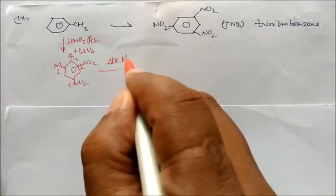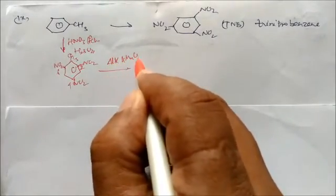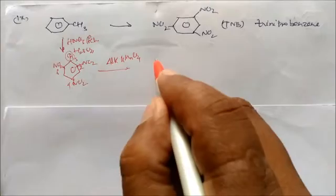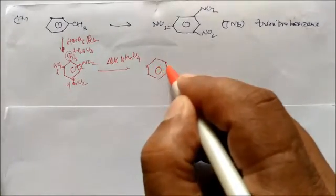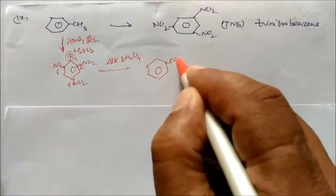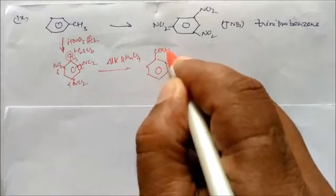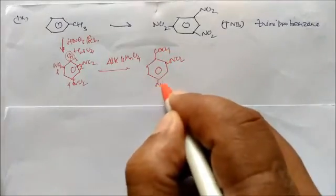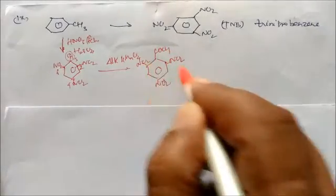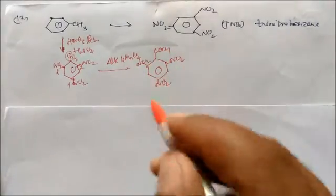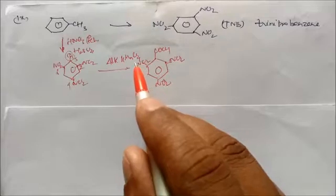Again, if you give alkaline KMnO4 solution, the CH3 group will convert into a carboxylic acid group, because KMnO4 is an oxidizing agent. So you will get 2,4,6-trinitrobenzoic acid with NO2 groups remaining.